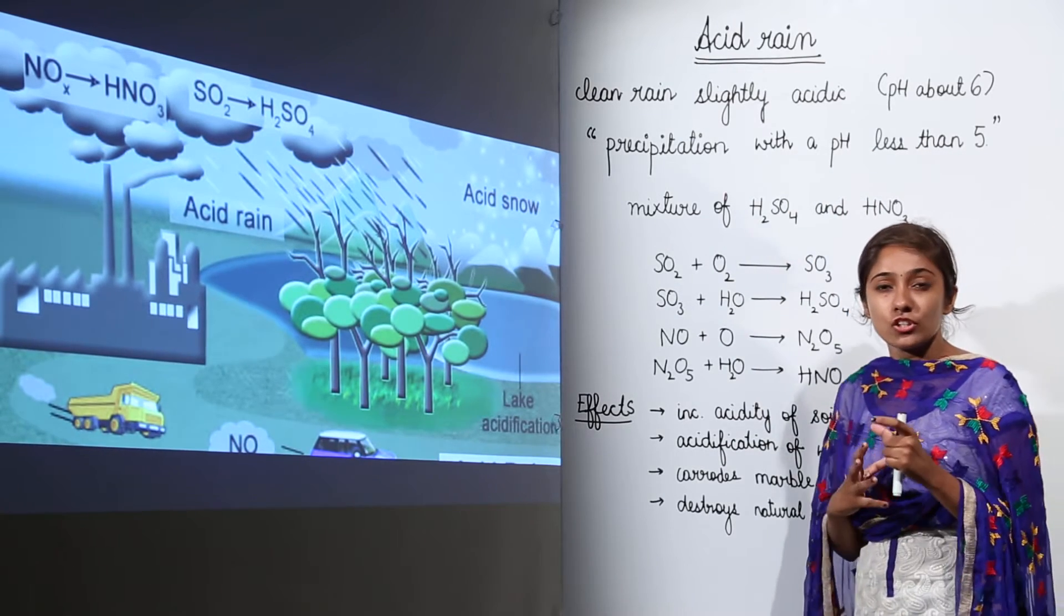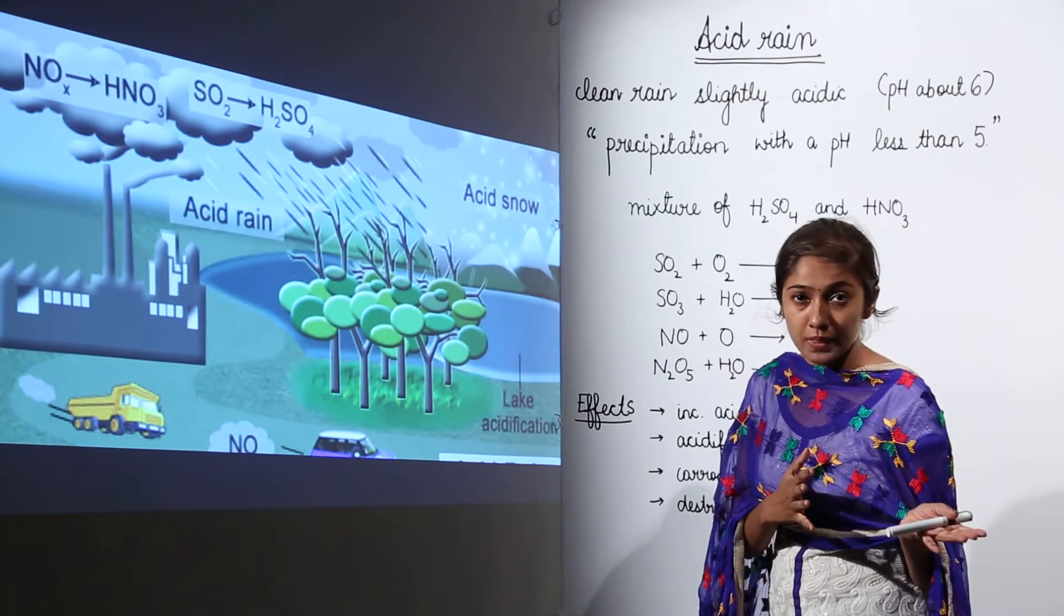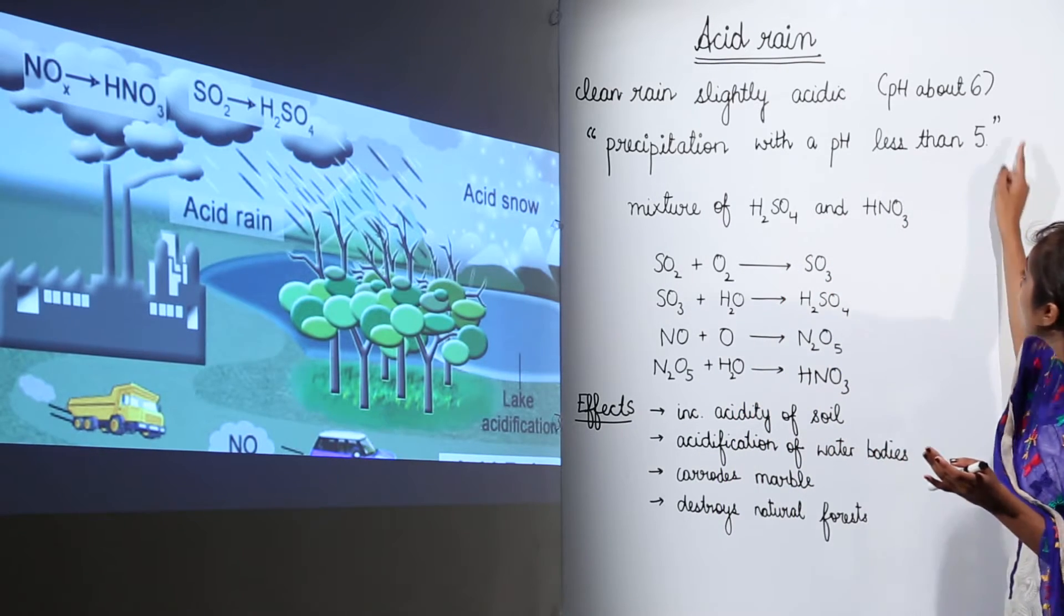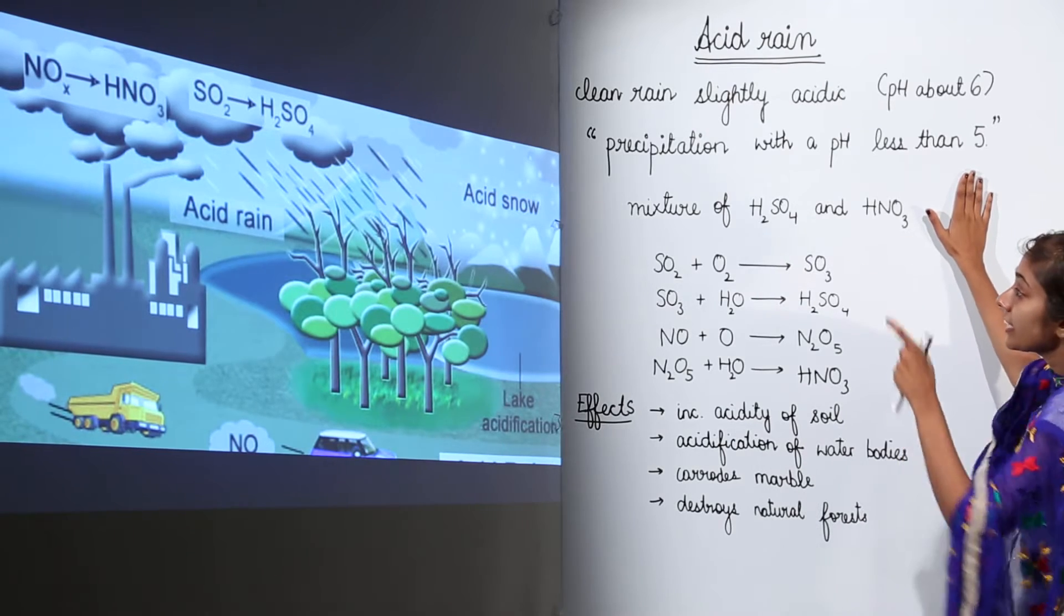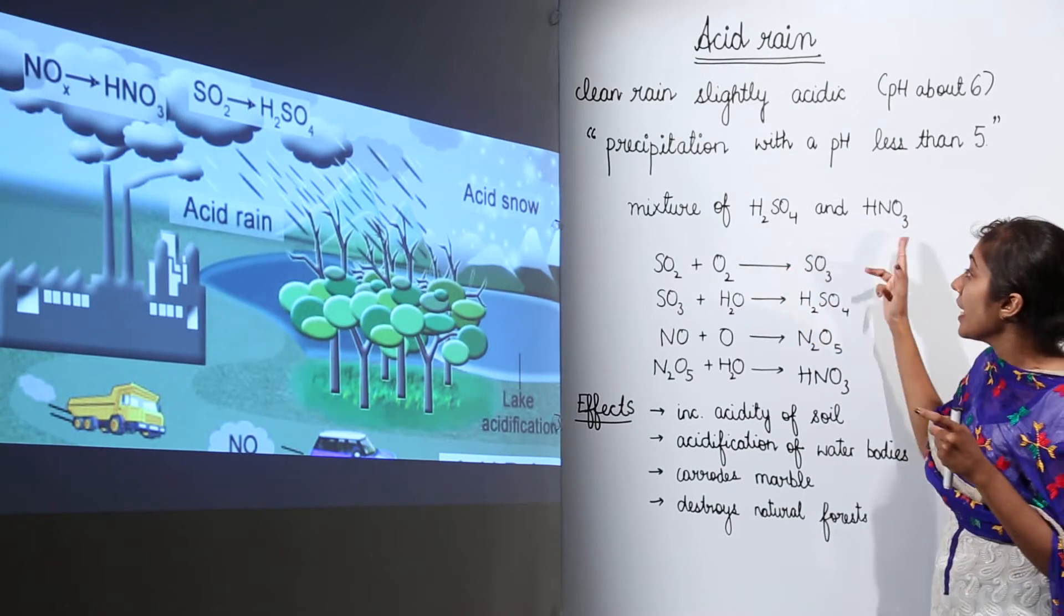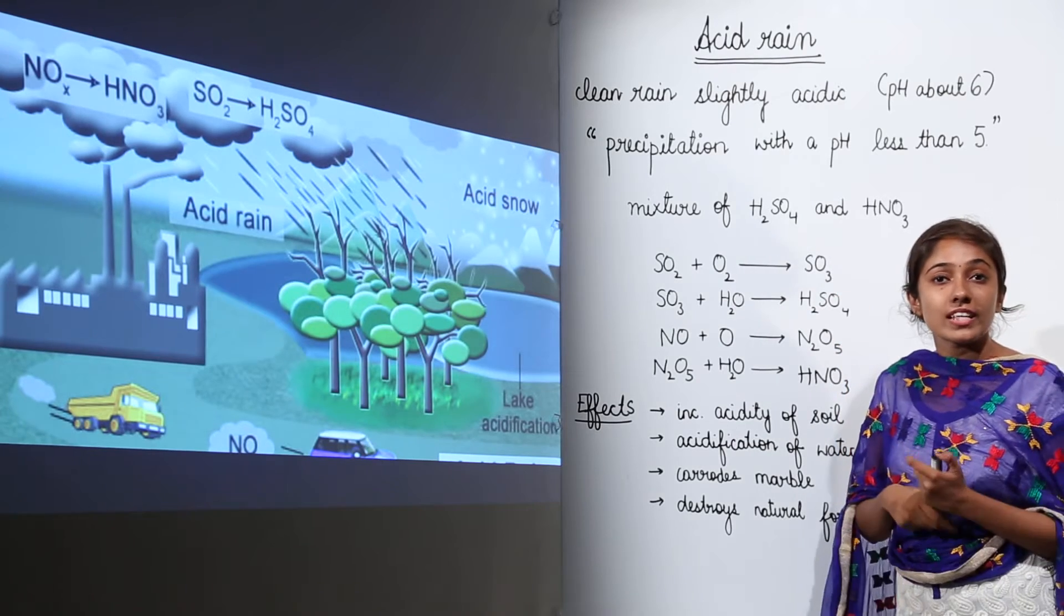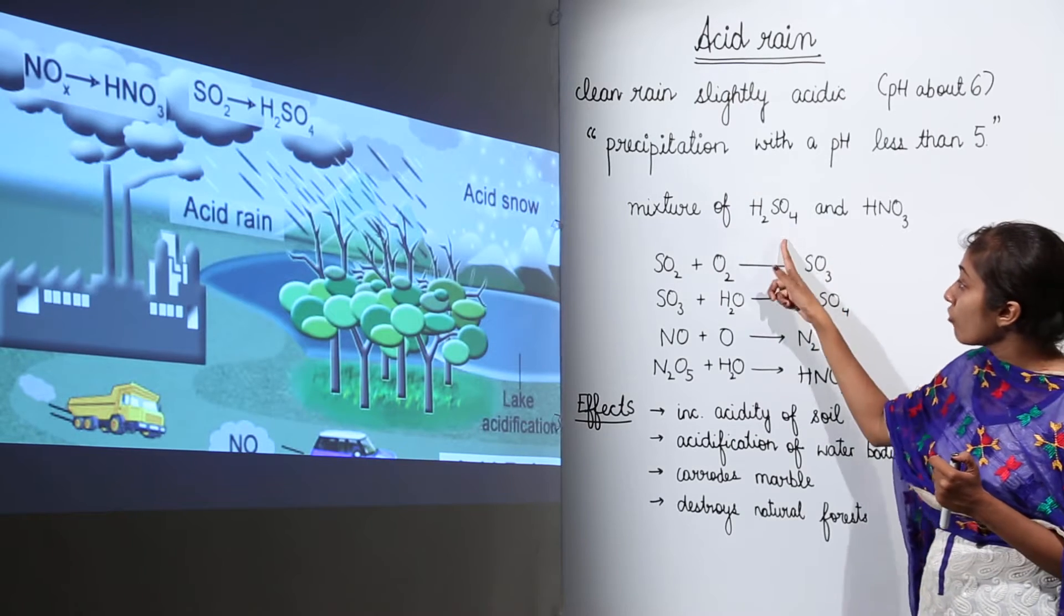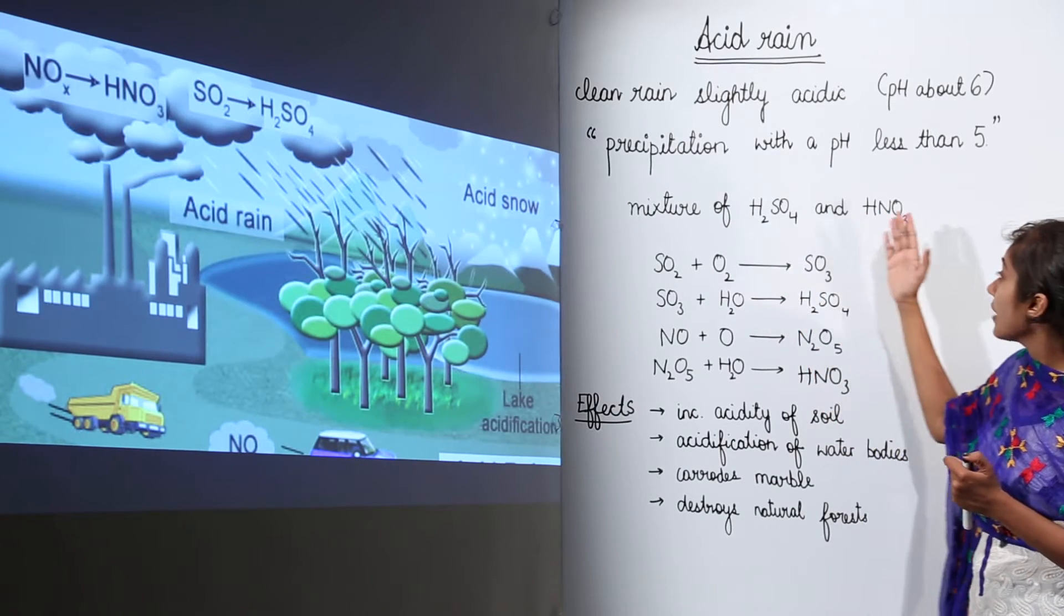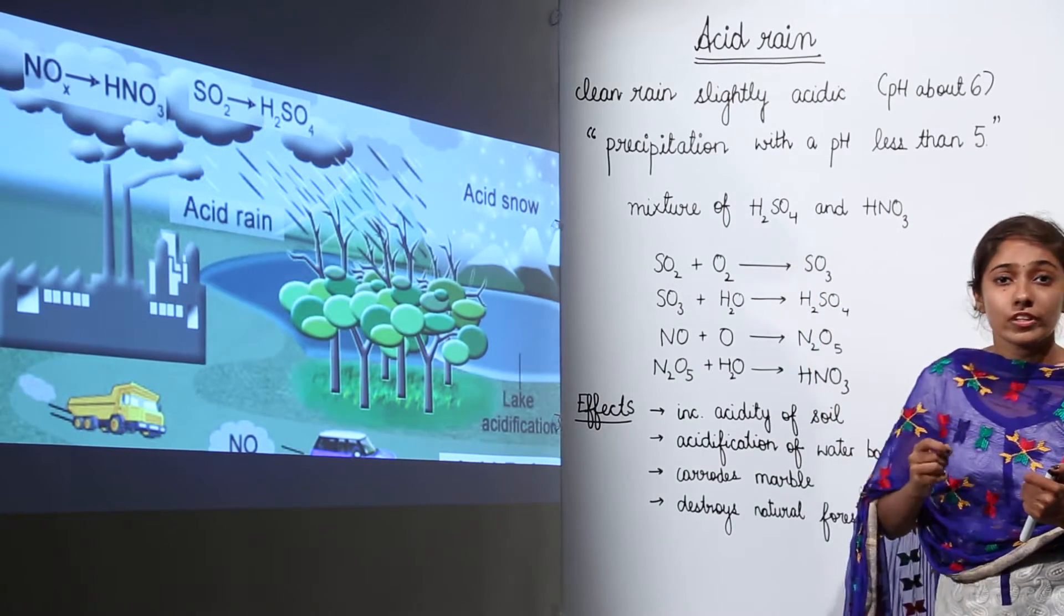So how does this pH turn acidic? Why does the pH become 5? It is because acid rain contains a mixture of these two acids. What are these two acids? Sulfuric acid and nitric acid. We have H2SO4, that is sulfuric acid, and we have HNO3, that is nitric acid.